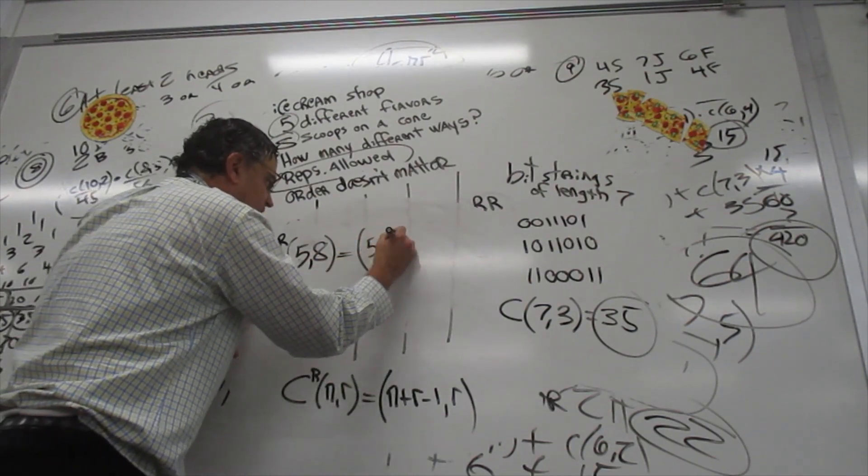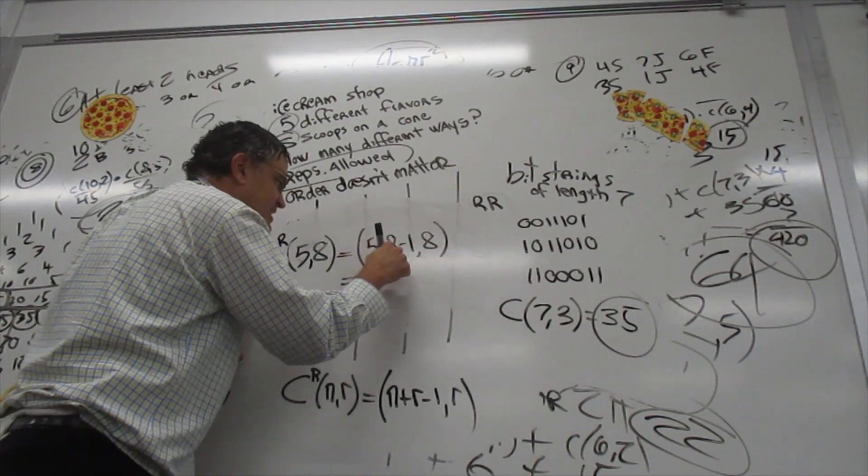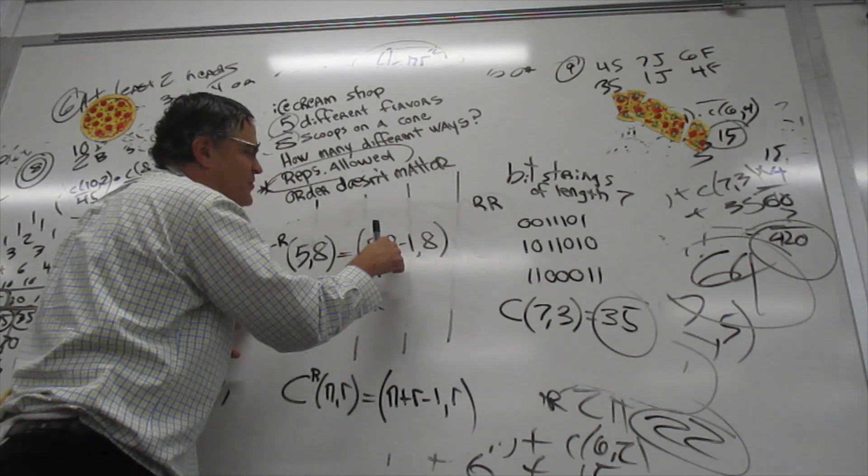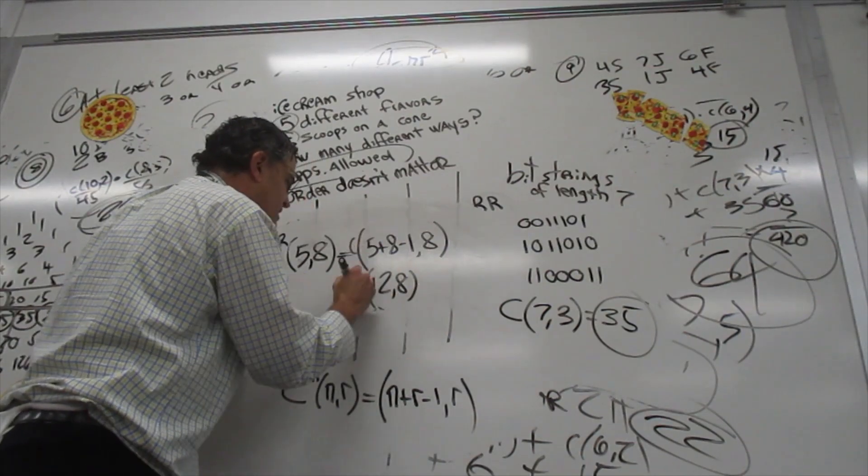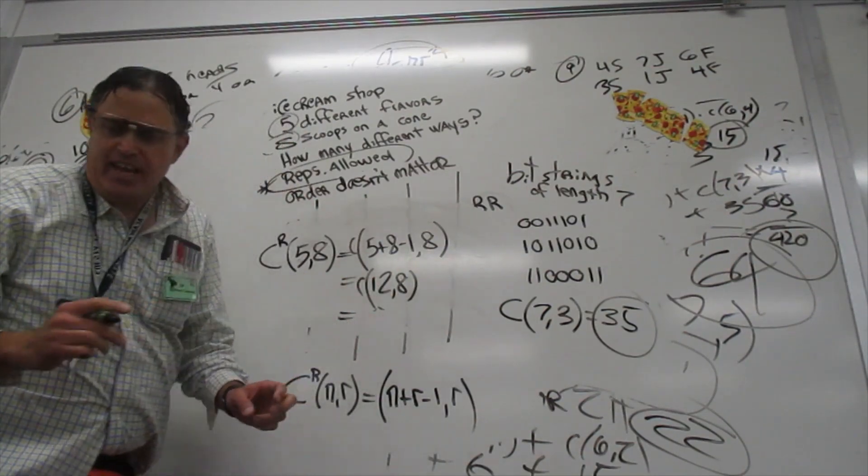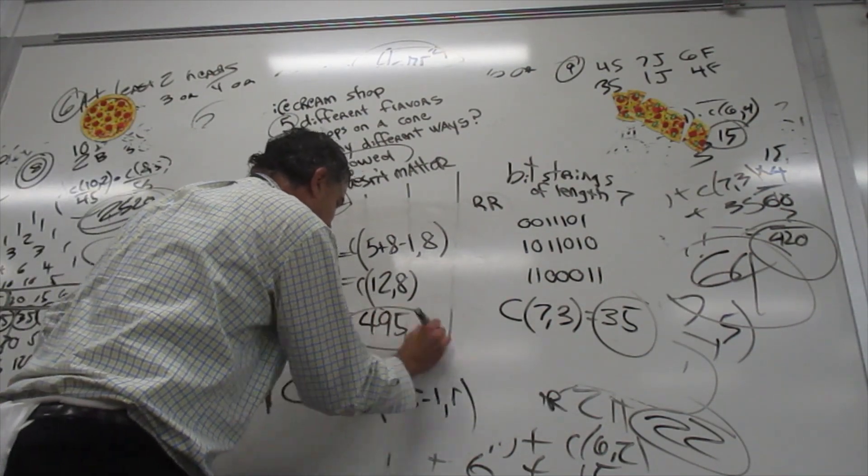So this is 13 minus 1. This is 12. There's combinations here. 12 choose 8. I look on Pascal's triangle. That gives me 495.